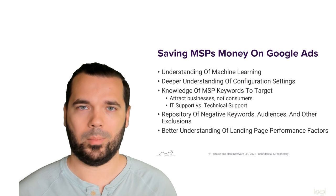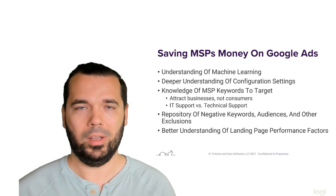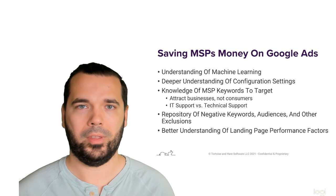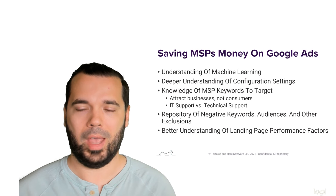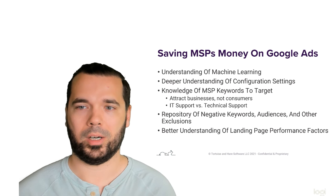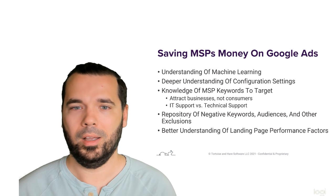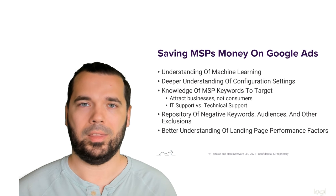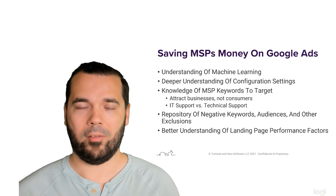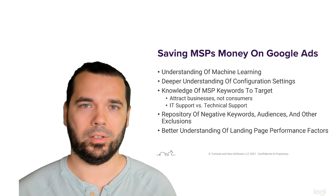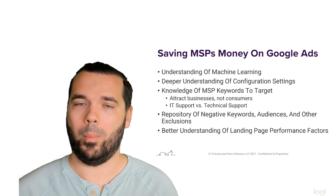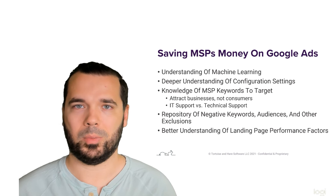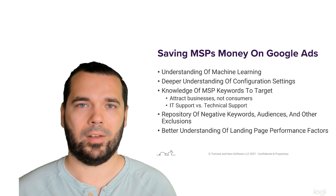That's difficult to undo — not impossible, but if you go with an amateur advertiser or a do-it-yourself approach and you train your account to perform badly, it's going to continue to perform badly. You have to understand the machine learning, how it works, and how to train these algorithms properly. That comes with a deeper understanding of the configuration settings in Google Ads, which are changing constantly. I've been doing advertising for about three years and I've seen about two to three significant changes per year that require adjustments.